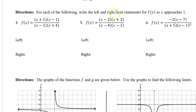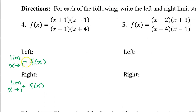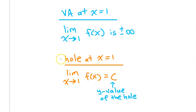For each of the following, write the left and right limit statements for f of x as x approaches 1. With a negative superscript, this means the limit as x approaches 1 from the left. With a positive superscript, this means the limit as x approaches 1 from the right. The value will depend on whether we have a vertical asymptote or a hole at x equals 1. If it's a vertical asymptote, the limit will be positive or negative infinity. If it's a hole, the limit will equal a constant — the y-value of the hole.